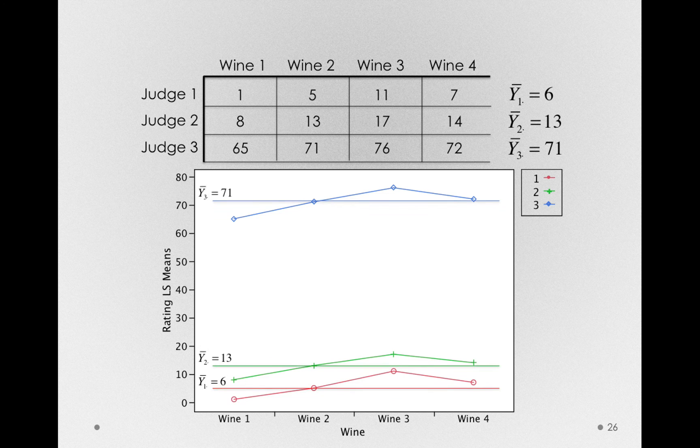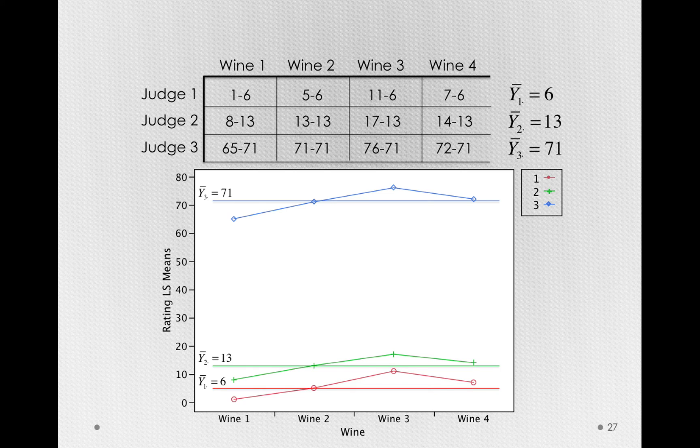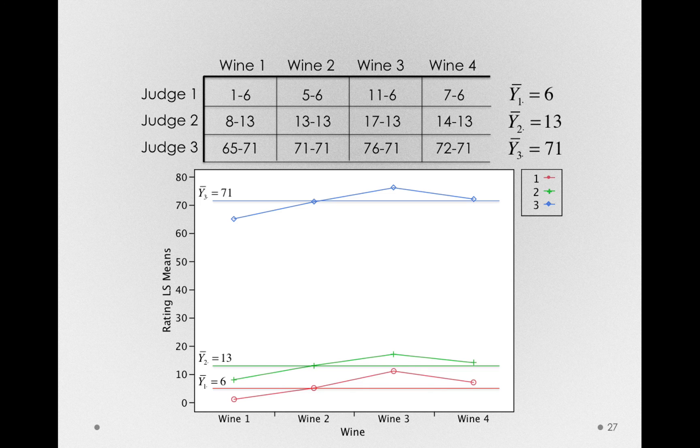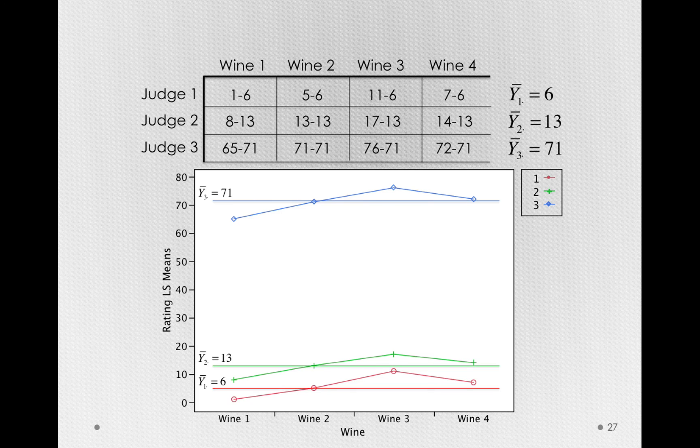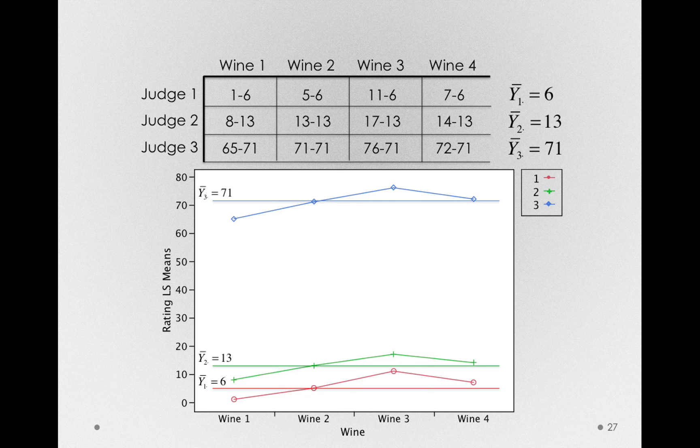Let me draw in lines for the mean of each subject. Then let's take the difference between each judge's observation and their average. In essence, let's center the data for each judge. In the table, let's look at judge one. I would take the judge one rating for wine one, a value of one, minus that judge's mean of six. For wine two, it would be five minus six. For wine three, eleven minus six. And wine four, seven minus six. In essence, we're going to center each judge's ratings of the wines around their set point, because we don't really care about the differences between judges on average. We just care to what degree they liked each wine.